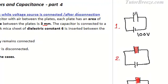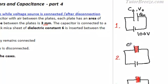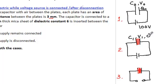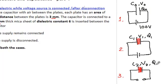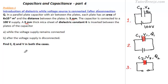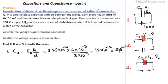In the first case we call the capacitance C0, the potential difference V0, and the charge Q0. In the second case: C1, V1, Q1. In the third case: C2, V2, Q2. Now let's find C0. The capacitance is given by epsilon_0 times A over D. Plugging in the values, this works out to be 18 picofarad.